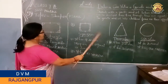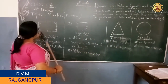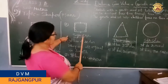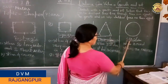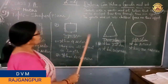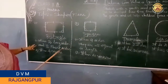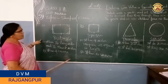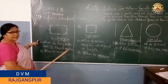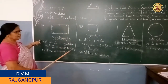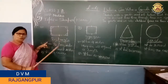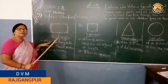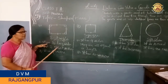So children, here we learned 4 plane shapes today: rectangle, square, triangle, and circle. You will draw these shapes in your notebook, write them down, and submit it in school. Am I clear children? Thank you.